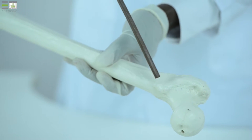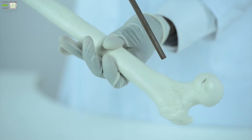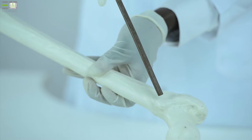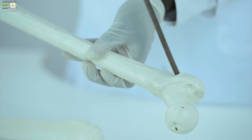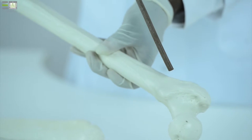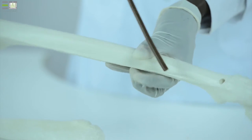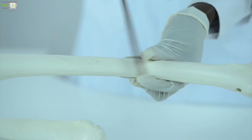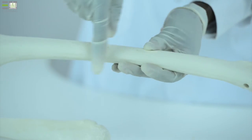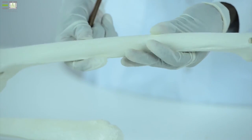The two trochanters are joined anteriorly by intertrochanteric line and posteriorly by the intertrochanteric crest. Within the intertrochanteric crest is quadrate tubercle. The shaft is subdivided into anterior surface, posteromedial and posterolateral surfaces.